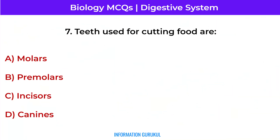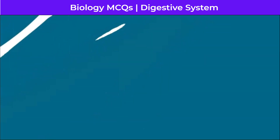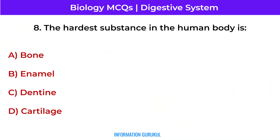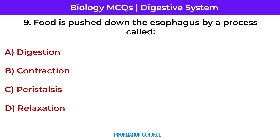Teeth used for cutting food are incisors. The hardest substance in the human body is enamel. Food is pushed down the esophagus by a process called peristalsis.